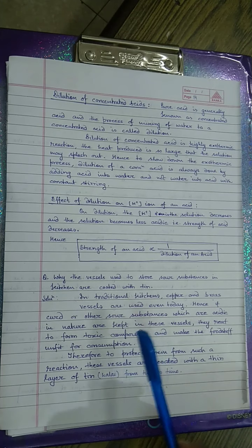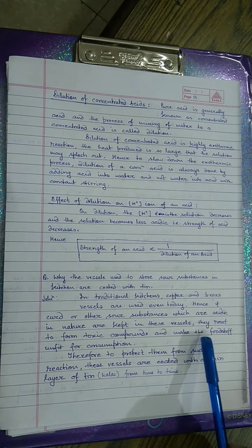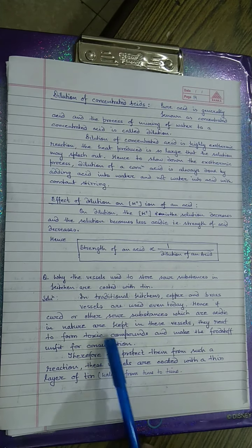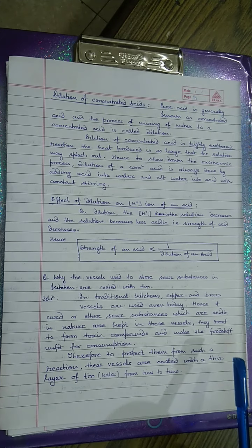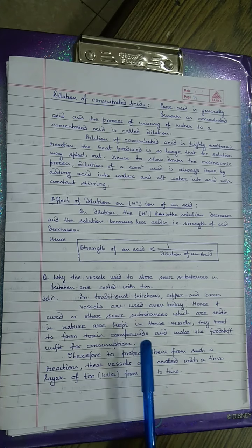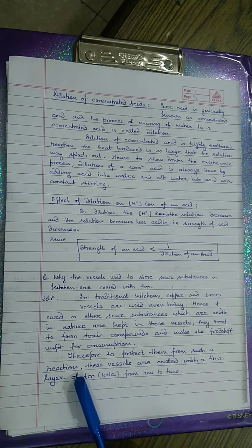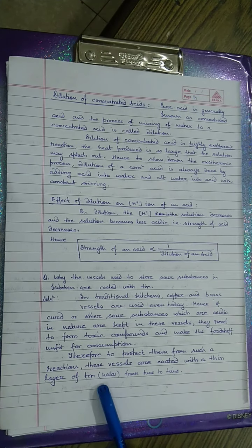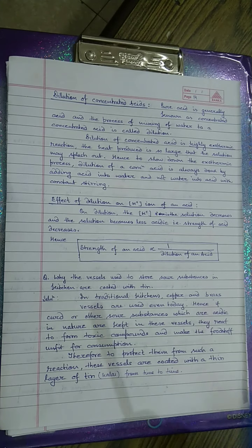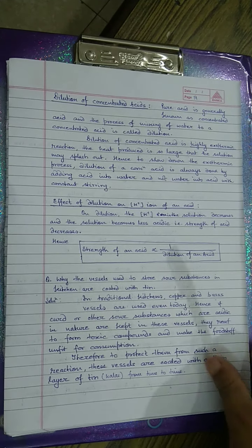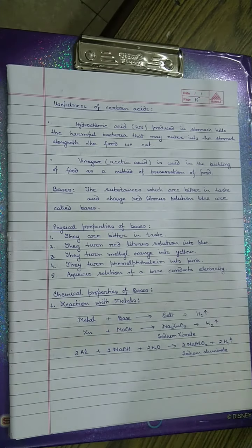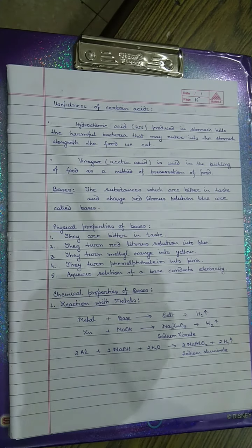Yeh acidic substances in se react karke ek toxic compound ka formation kar dete hain jo hamare food stuff ko khane yogya nahi rakhta — unfit for consumption. Therefore, to protect them from such a reaction, these vessels are coated with a thin layer of tin, jise kali bhi kaha jaata hai, from time to time.